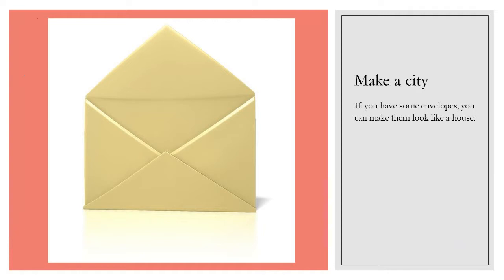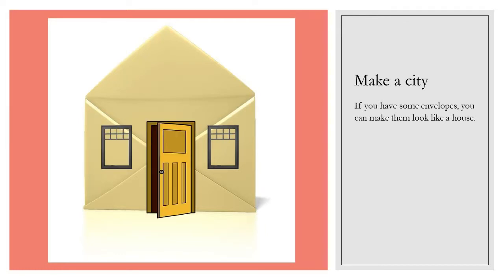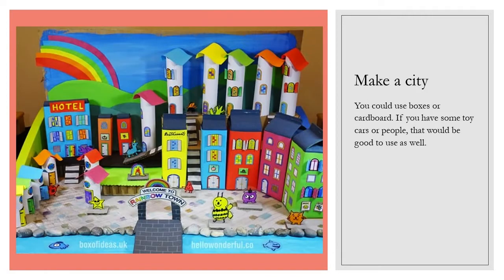If you have some envelopes, you can make them look like a house. When you open the envelope, it already looks like a house with the roof. You can add windows, a door, a chimney, whatever else you want to add. You could use boxes or cardboard. If you have some toy cars or people, that would be good to use as well.